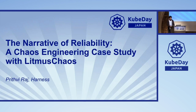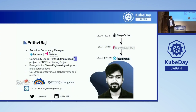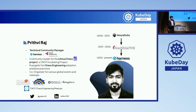I'll start by introducing myself. My name is Prithvi Raj. I've been working in the chaos engineering space for the last two and a half years. We started off with Maya Data, and then Chaos Native became a primary sponsor to Litmus, and now Harness is a primary sponsor to Litmus Chaos. I've been organizing Kubernetes Community Days in Bangalore, Chennai, and many more events including Chaos Carnival. Feel free to reach out to me on socials if you're interested in chaos or community.